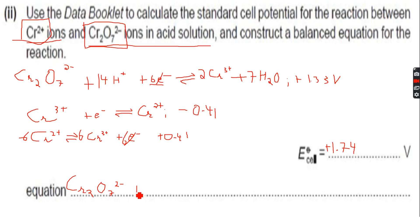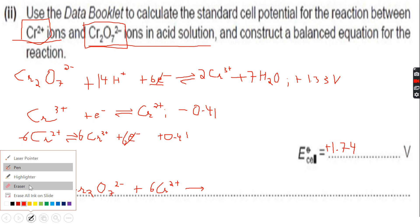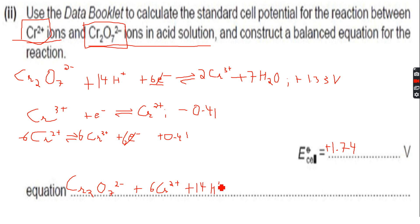Plus 6 Cr²⁺, giving us 14... sorry, we forgot to add the 14 H⁺, so plus 14 H⁺. All the left hand sides add up together and all the right hand sides add up together, gives us plus 14 H⁺.